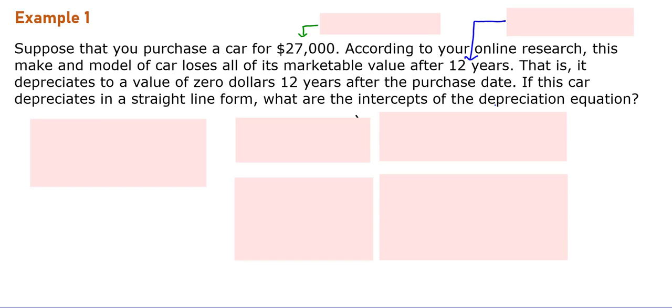Suppose that you purchase a car for $27,000. That $27,000 is going to be our max car value. As cars get older, they do nothing but go down, or what we call depreciate. The value of the car goes down each year. According to your online research, this make and model of car loses all of its marketable value after 12 years.